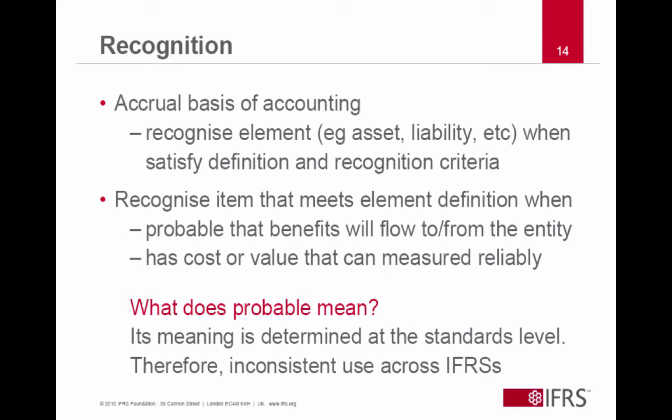In terms of recognition, the framework talks about using an accrual basis of accounting, and we recognize one of these elements — an asset or a liability, income and expense — when the elements satisfy the definition of that element and additional recognition criteria. So something meets the definition of an asset, but then we ask ourselves: is it probable that benefits will flow to or from the entity? And does this asset have a cost or value that can be measured reliably? If the answer to those two questions is yes, then the item is recognized in the financial statements.